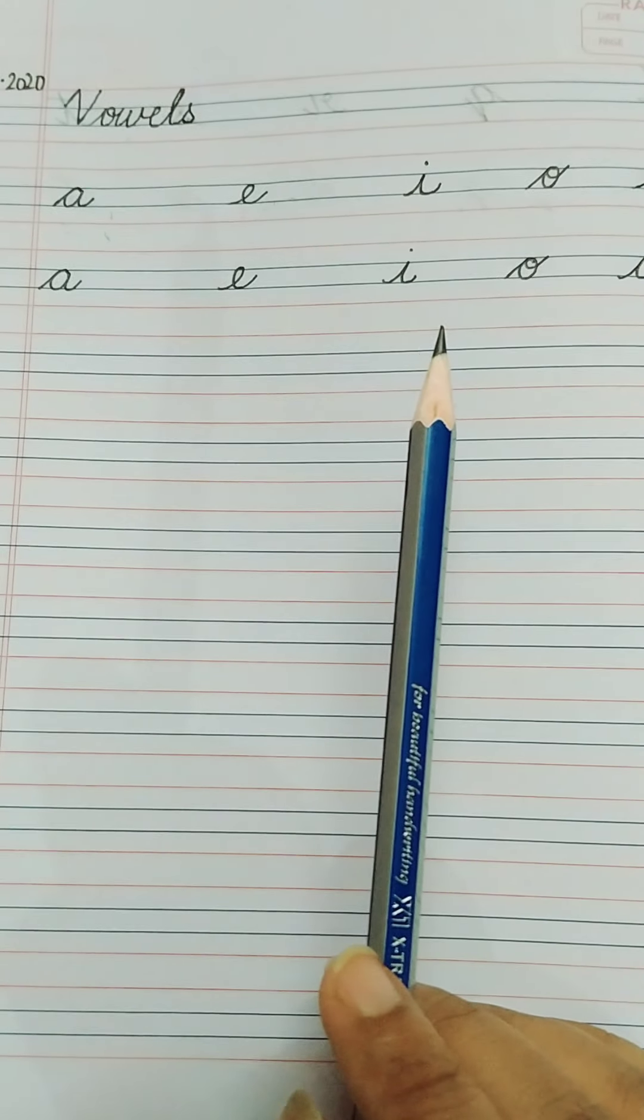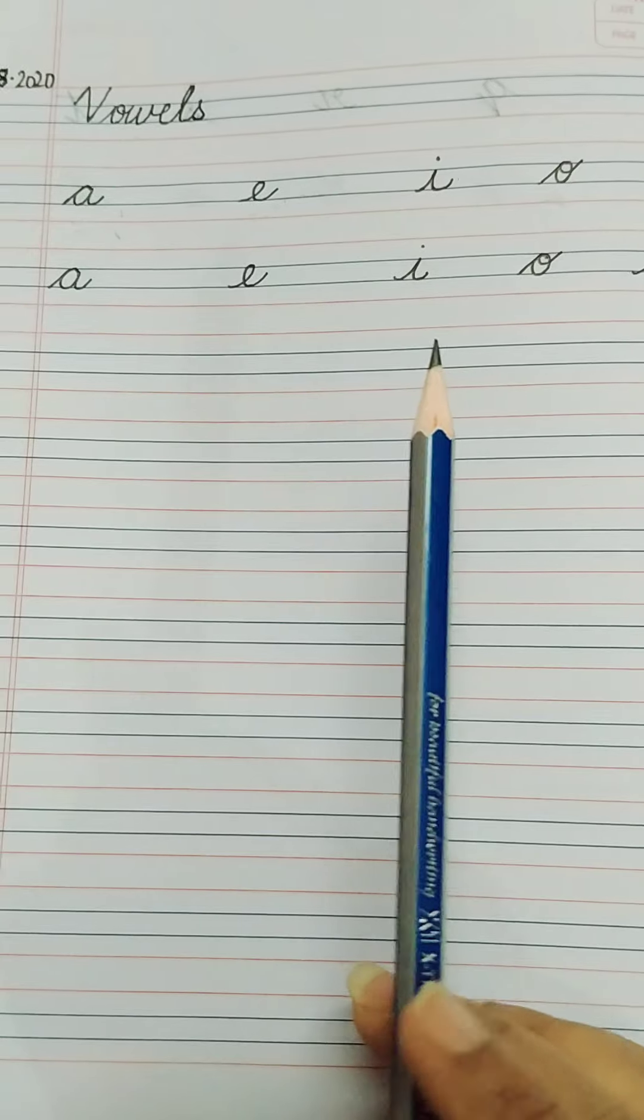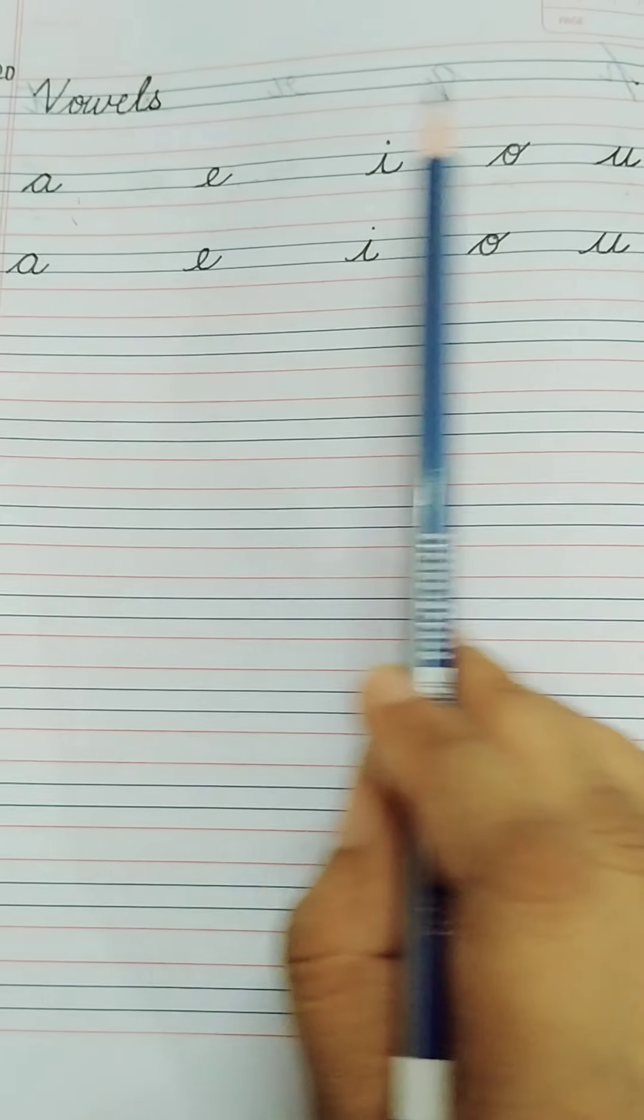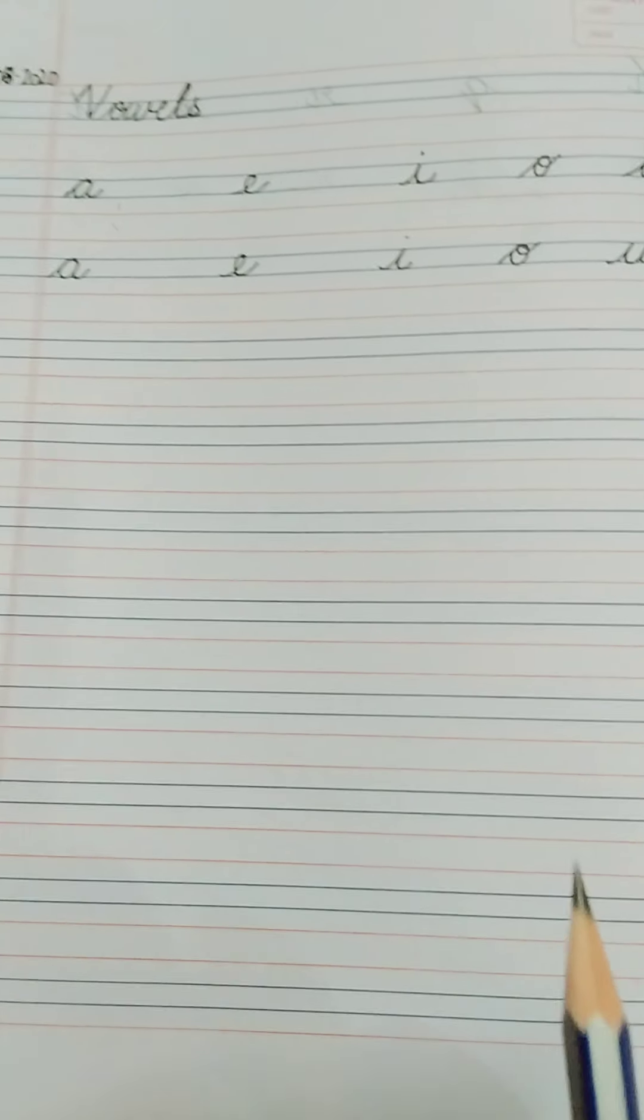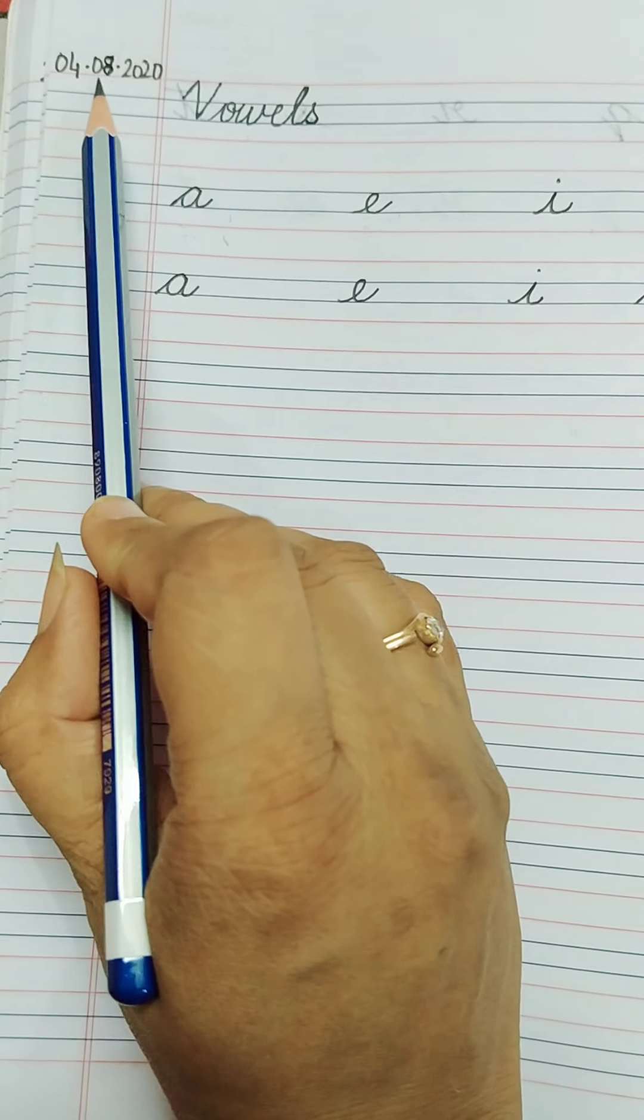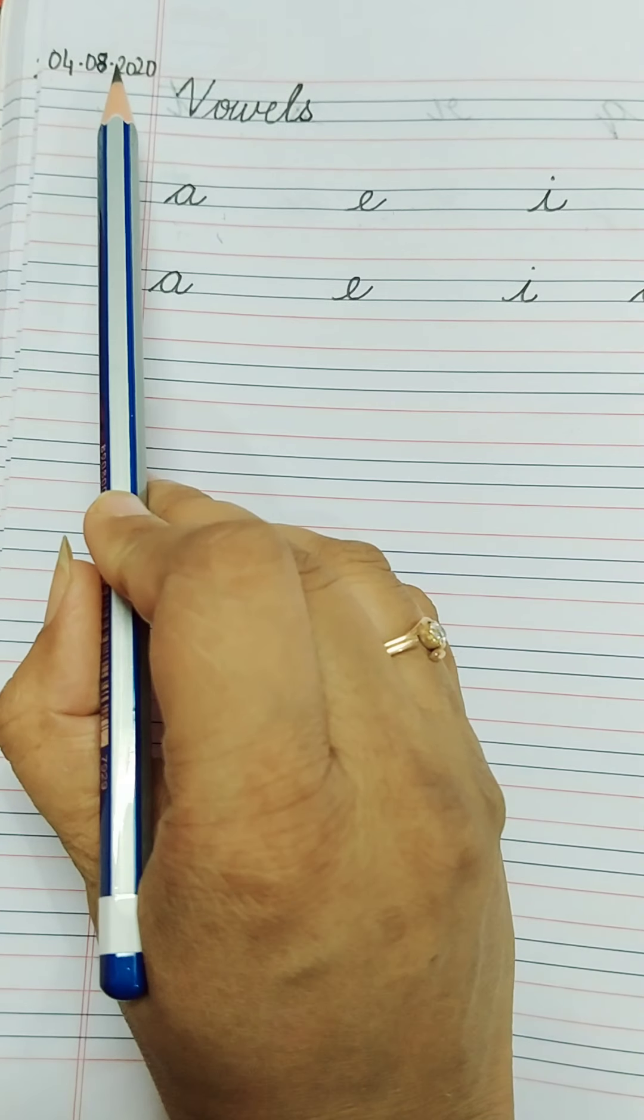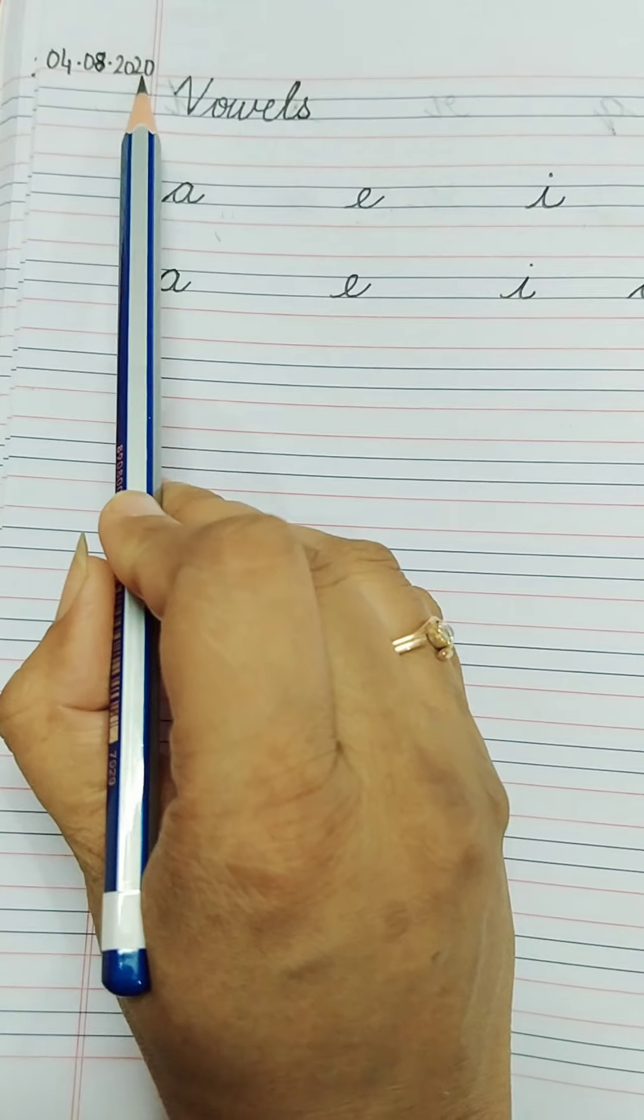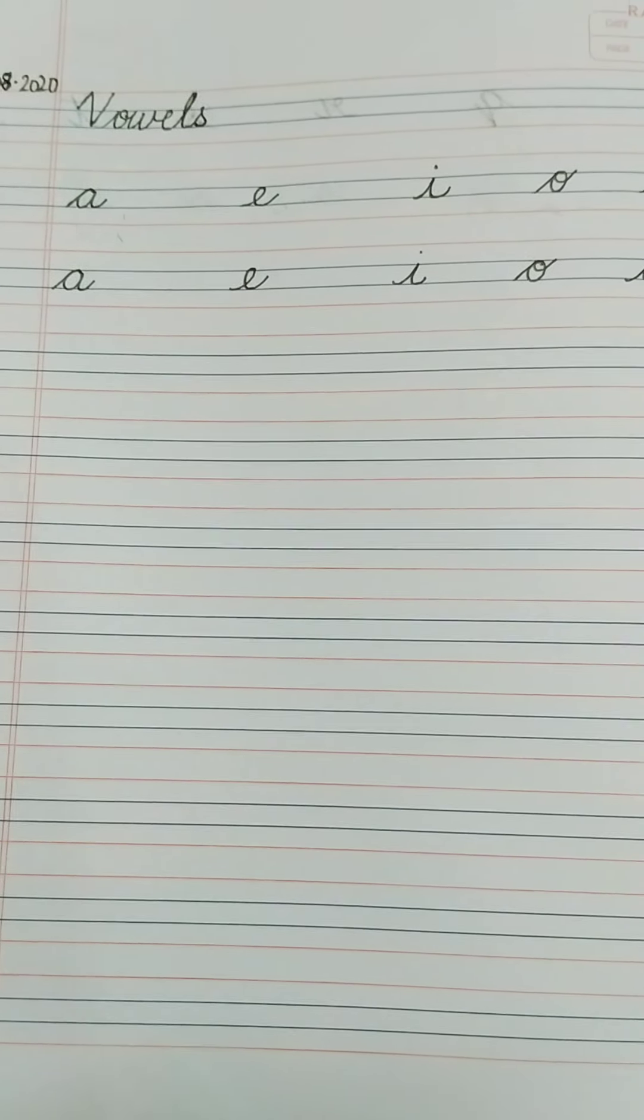Dear children, your homework is that you have to write one full page in your English note copy. All these vowels you have to write, and you have to write the date that is 4.08.2020. Okay? Thank you.